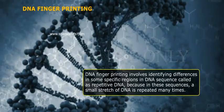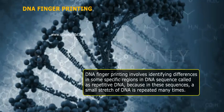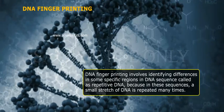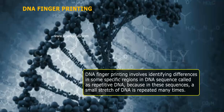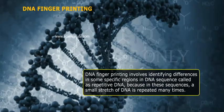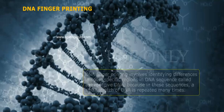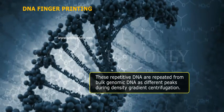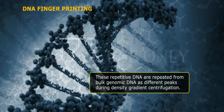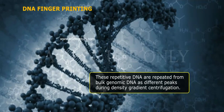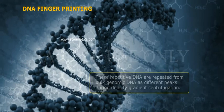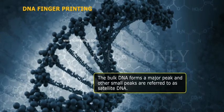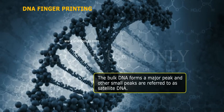DNA fingerprinting involves identifying differences in some specific regions in DNA sequence called repetitive DNA, because in these sequences a small stretch of DNA is repeated many times. These repetitive DNA are separated from bulk genomic DNA as different peaks during density gradient centrifugation. The bulk DNA forms a major peak and the other small peaks are referred to as satellite DNA.